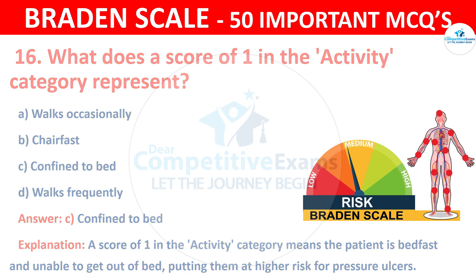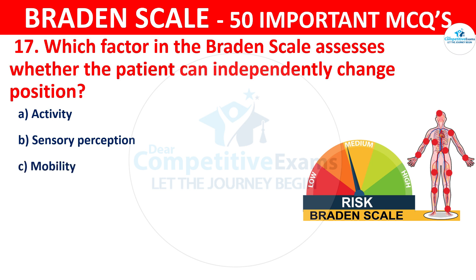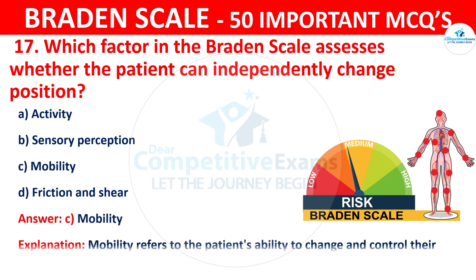Question number seventeen: Which factor in the Braden scale assesses whether the patient can independently change position? Your options are activity, sensory perception, mobility, or friction and shear. The correct answer is C — mobility. Mobility refers to the patient's ability to change and control their body position independently.